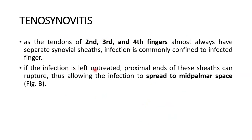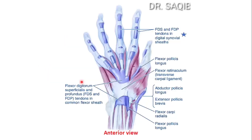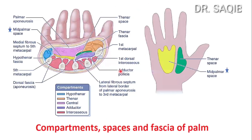If the infection is left untreated, the proximal ends of these sheaths can be ruptured, thus allowing the infection to spread to the mid-palmar space. The second, third, and fourth fingers have separate tendon sheaths; you can see the mid-palmar space highlighted in yellow, and infection can spread there if tenosynovitis is left untreated.